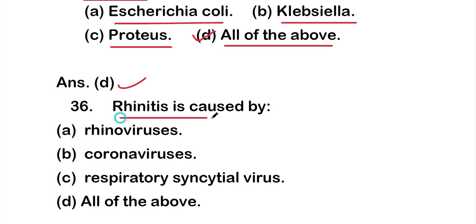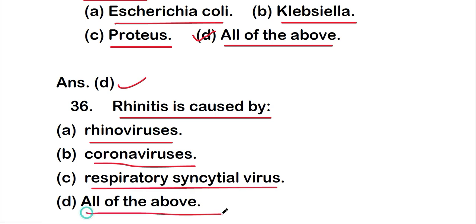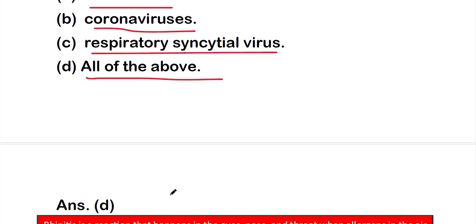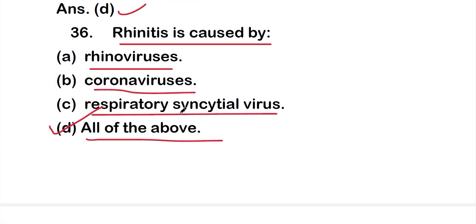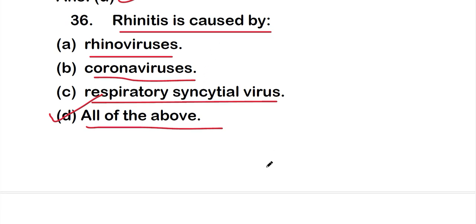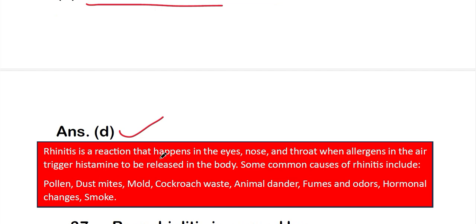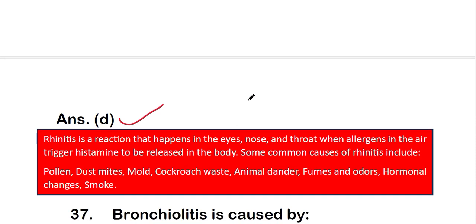Question 36: Rhinitis is caused by — option A: rhinoviruses, option B: coronaviruses, option C: respiratory syncytial virus, or option D: all of the above. The right answer is option D — all of these viruses are responsible for rhinitis. Rhinitis is a reaction that happens in the eyes, nose, and throat when allergens trigger histamine release. Common causes include pollens, dust mites, mold, animal dander, fumes, hormonal changes, and smoke.